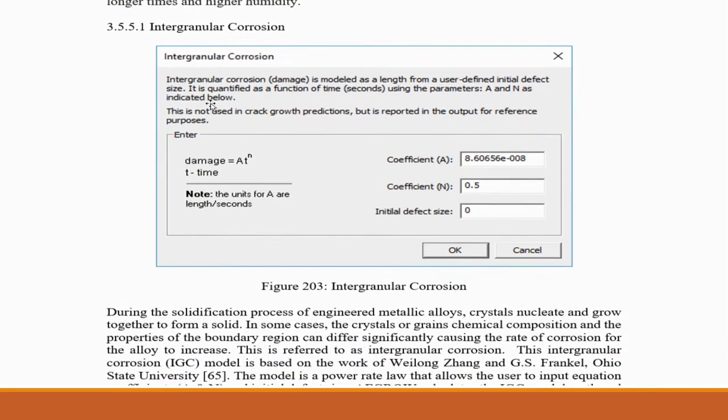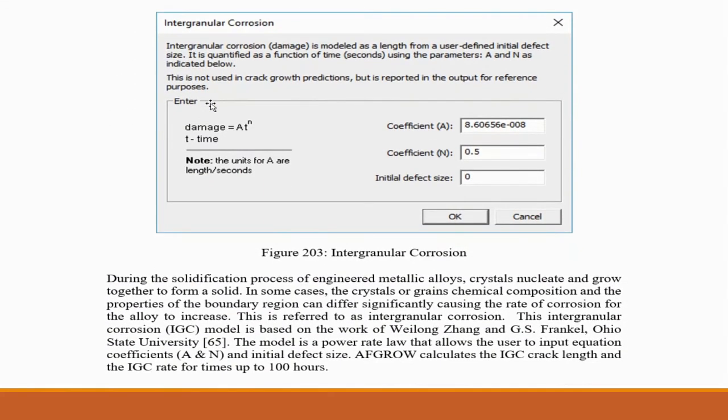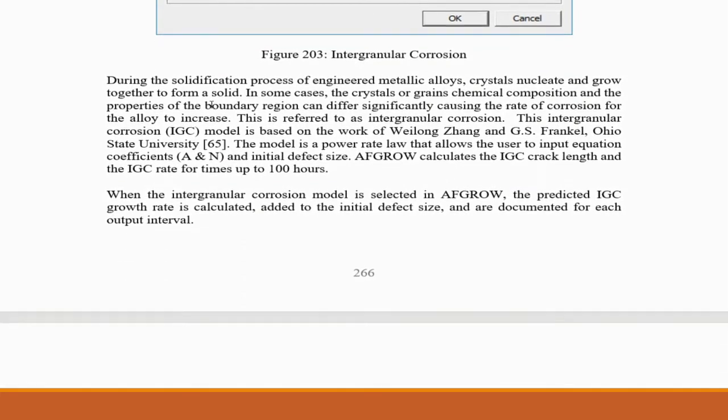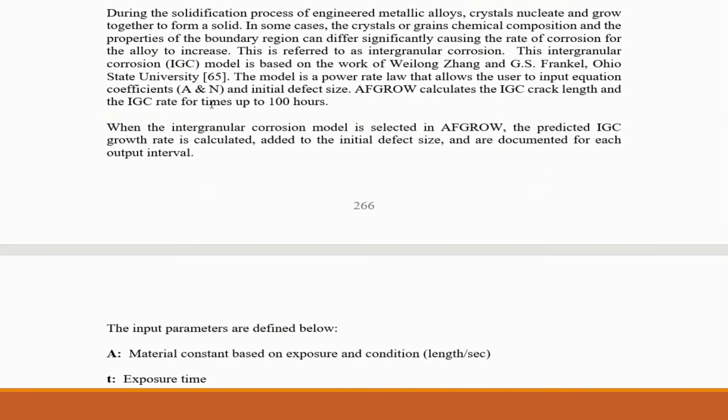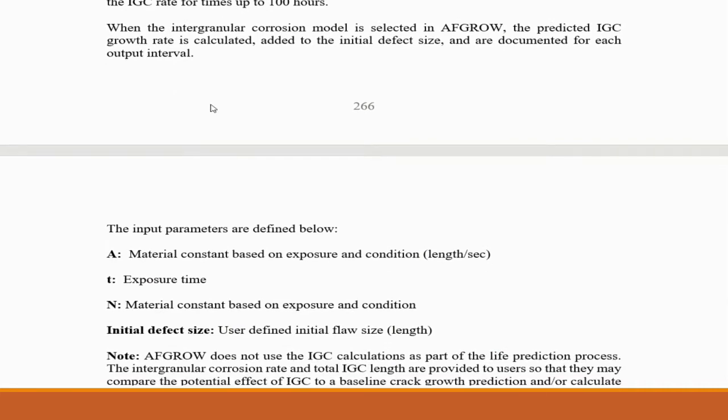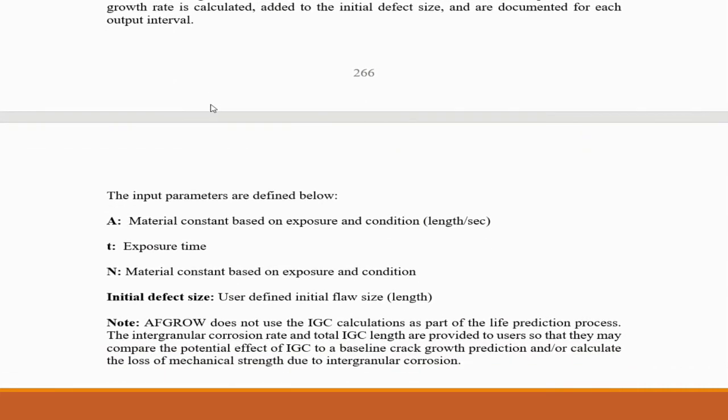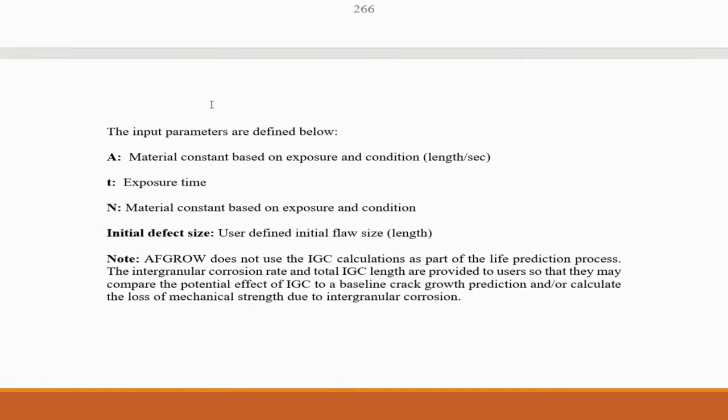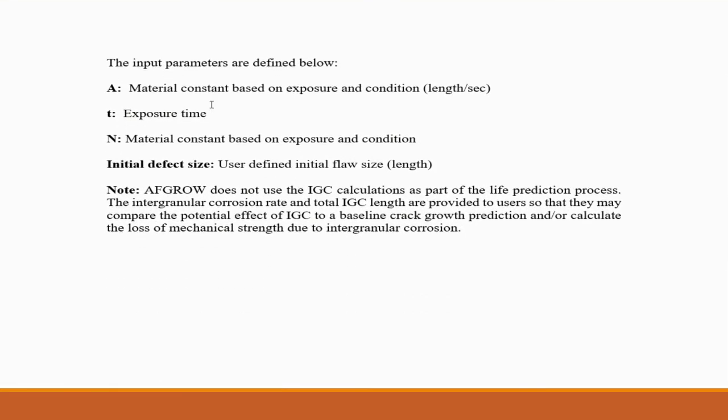Here is the intergranular corrosion model. The input parameters are A which is a material constant, T the exposure time, and N another material constant.